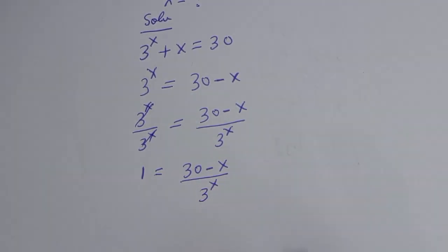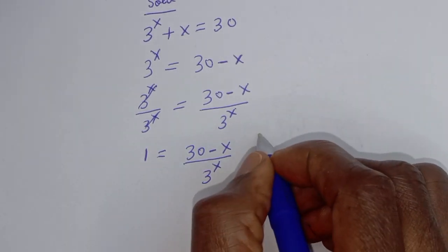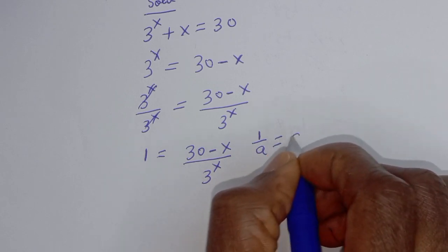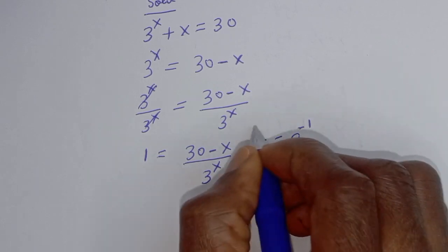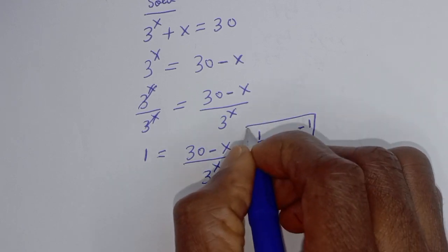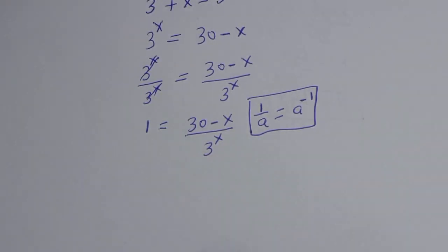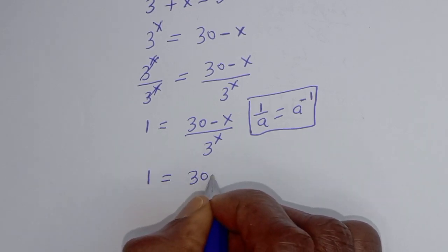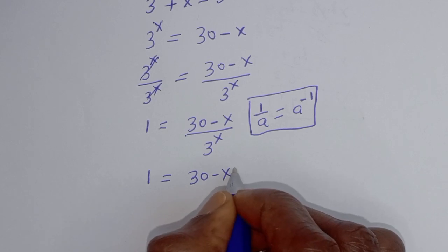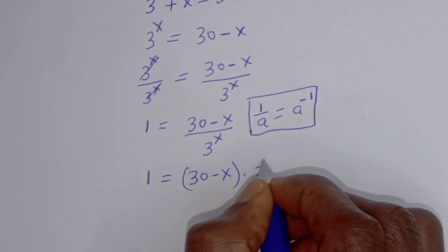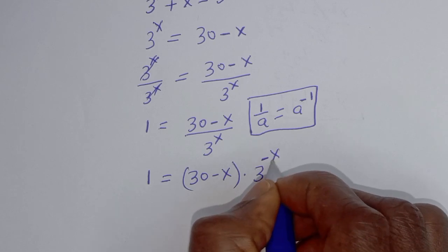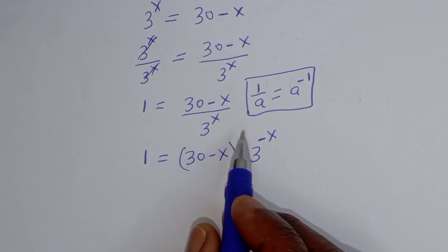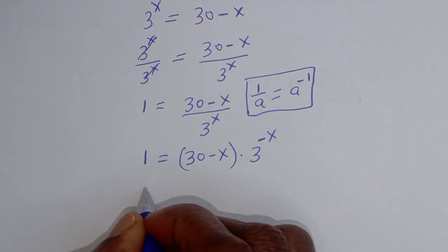Now take note that if you have 1 over a, this is equal to a raised to power minus 1. So this can be written as 1 is equal to 30 minus s multiplied by 3 raised to power minus s. Let's multiply 3 raised to power 30 to both sides.